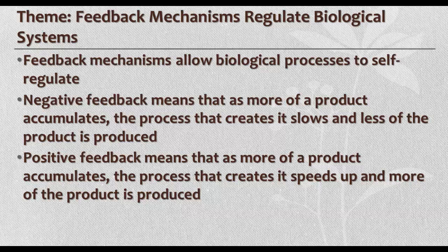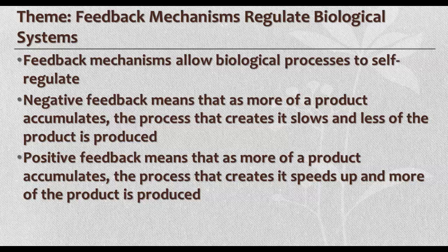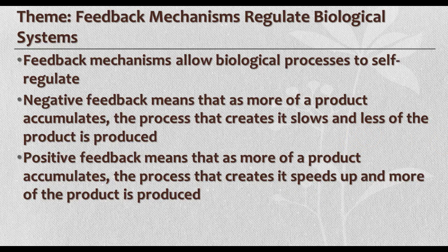Another theme is feedback mechanisms, which regulate systems. Think about the thermostat example — something turns on to change the conditions, and when they reach the optimum level, something else turns it off. We have both positive and negative feedback. Negative feedback means that as a product accumulates, the process that makes it slows down. Positive feedback means that as more product accumulates, the process speeds up. Some systems have both negative and positive feedback in different parts of the overall system.